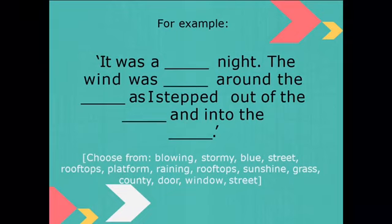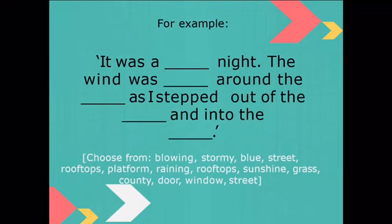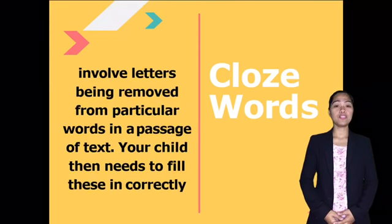This is the example for the cloze paragraph: 'It was a blank night. The wind was blank around the blank as I step out of the blank and into the blank.' The answer is: 'It was a stormy night. The wind was blowing around the rooftop as I step out of the door and into the grass.'